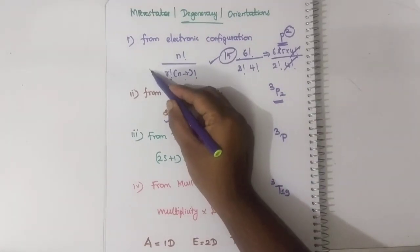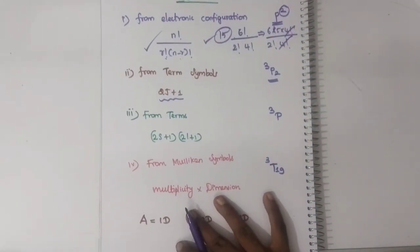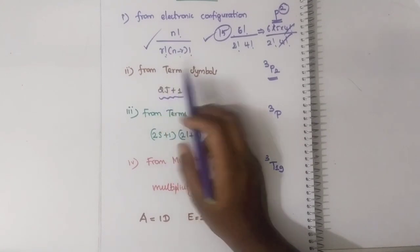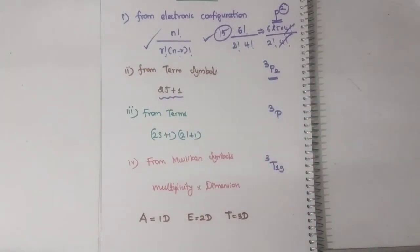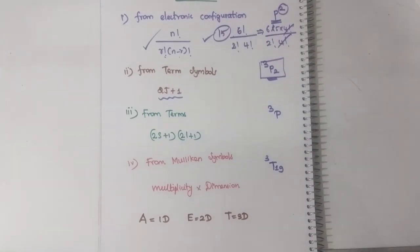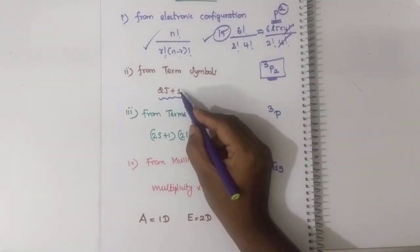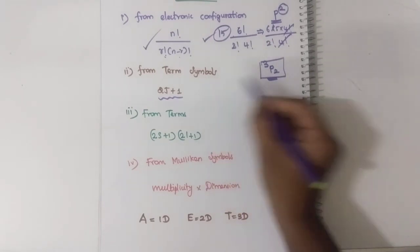Now if they have given you a term symbol - term symbols we have already studied - the formula is simply 2J plus 1. It is very simple in the case of term symbols.